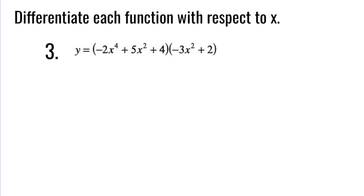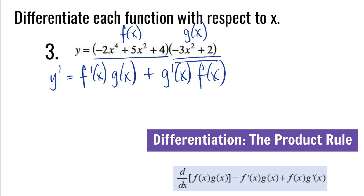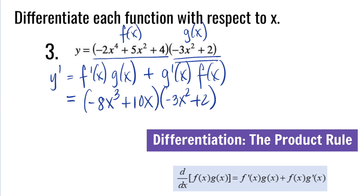Question number 3: y is equal to negative 2x to the fourth plus 5x squared plus 4, multiplied by negative 3x squared plus 2. The first parentheses is our f(x) and the second is our g(x). To find y prime using the product rule: the derivative of f(x) is negative 8x cubed plus 10x, multiplied by g(x), negative 3x squared plus 2. Plus the derivative of g(x), which is negative 6x, multiplied by f(x), negative 2x to the fourth plus 5x squared plus 4.